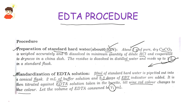First, preparation of standard hard water. It is 1 gram CaCO3. It is dissolved in HCl. It is evaporated in China dish. The residue is dissolved and made up to 1 litre.